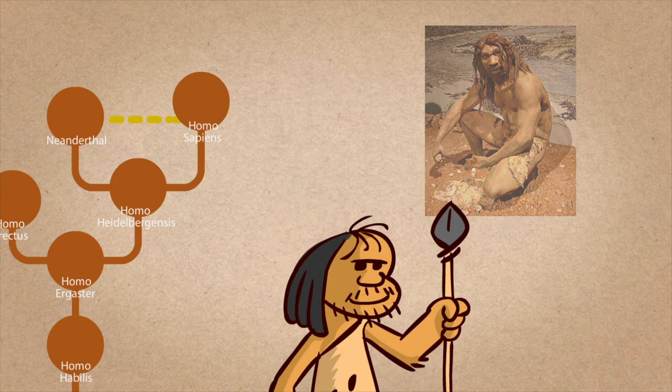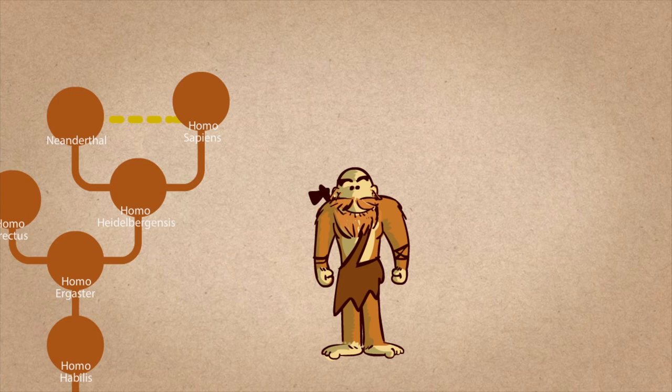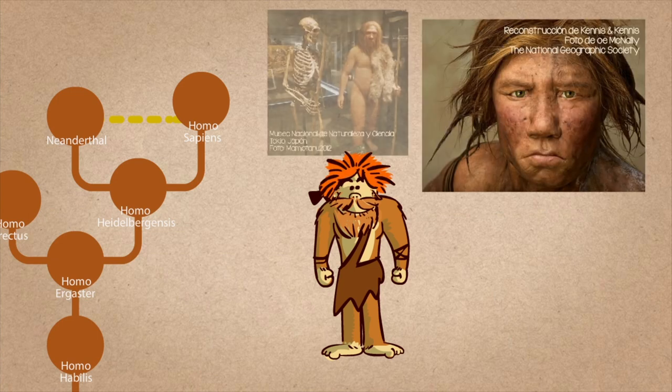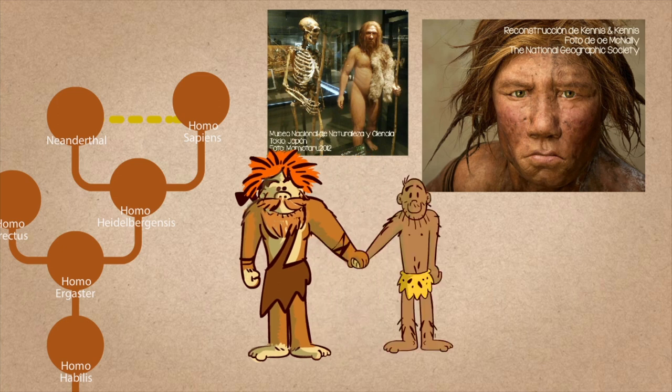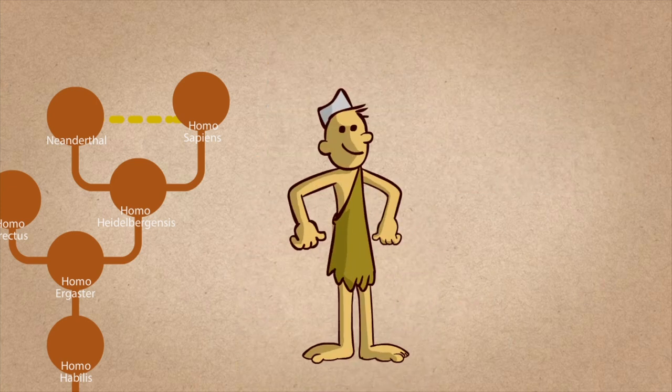Neanderthals were big, had wide noses, and some of them were red-haired. They lived at the same time as the Cro-Magnon ancient humans in Europe and disappeared 25,000 years ago, very likely after interbreeding with them.